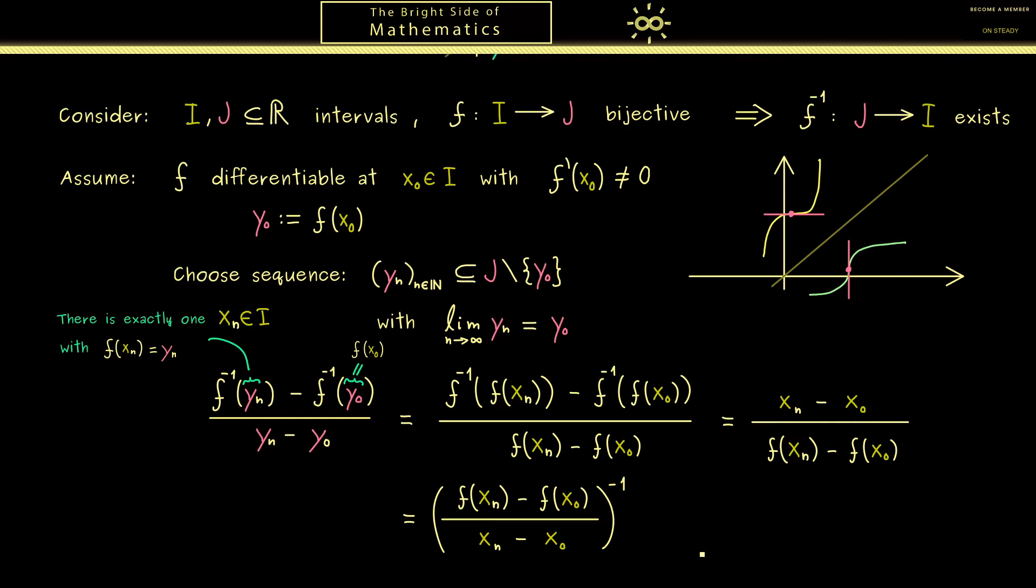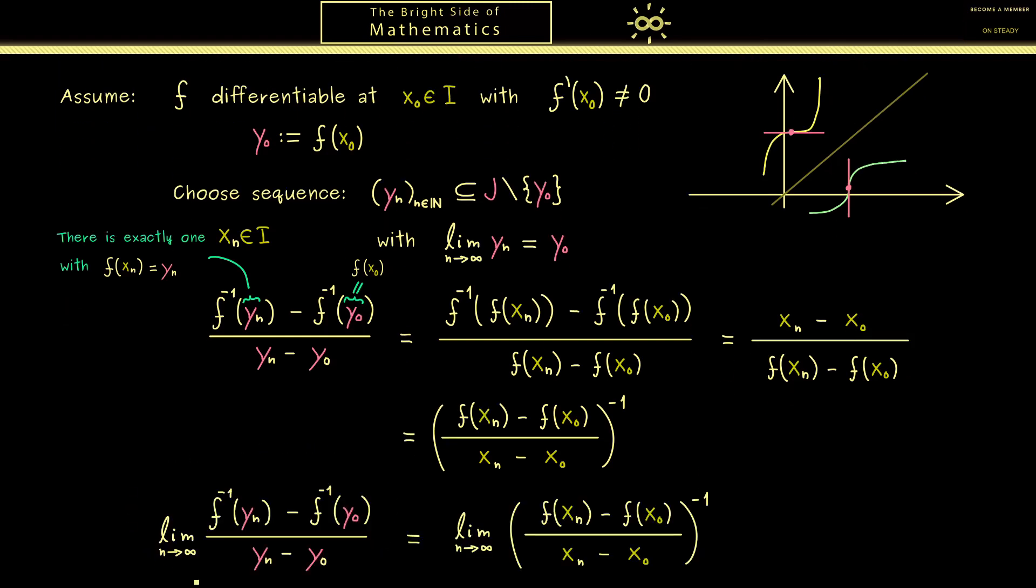So let's write this down in the next line. So here we see the left hand side is the derivative of the inverse function at the point y0 if it exists. Of course we hope that we can show the existence with the right hand side. Now the first thing we can do here is to push the limit inside the parentheses by the limit theorems for sequences. However please note this also only works if this limit exists. And indeed this is not clear at all. Now the whole limit would be the derivative of f at the point x0 if this sequence goes to x0.